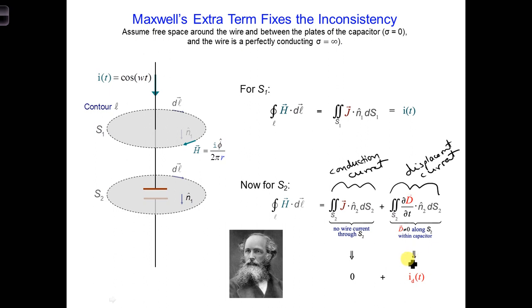The extra displacement current term fixes our inconsistency. So in this case, assuming free space between the two plates of the capacitor, the conduction current flowing in the wire must equal the displacement current with the subscript D between the plates of the capacitor.